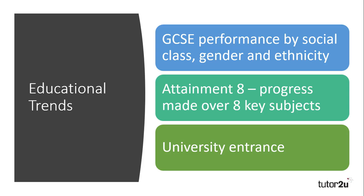There is another measure called Progress 8, which compares SATs scores at Key Stage 2 at the end of primary school to GCSE scores to see how much progress a student has made during their secondary education. These are placed into the league table as well, with the aim of showing how much progress a student has made in a specific school and to rank that school accordingly.